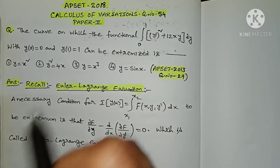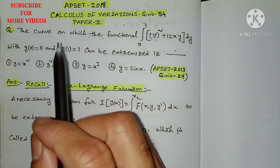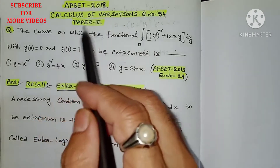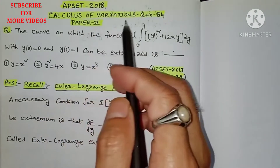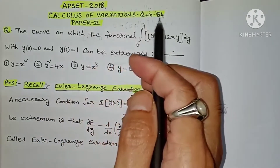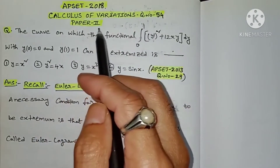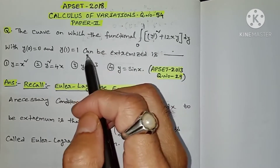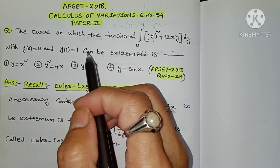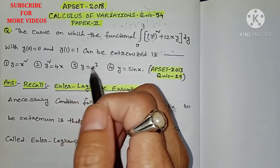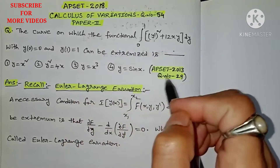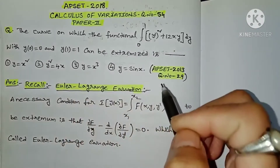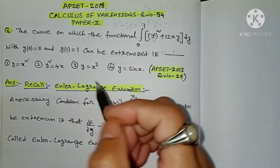Hi everyone, this is Ramakrishna. Welcome to my channel. In this video, I am going to discuss APSET 2018 calculus of variations, question number 54 from Paper 2. This is a repeated question — it was already in APSET 2013, question number 29 from Paper 2.